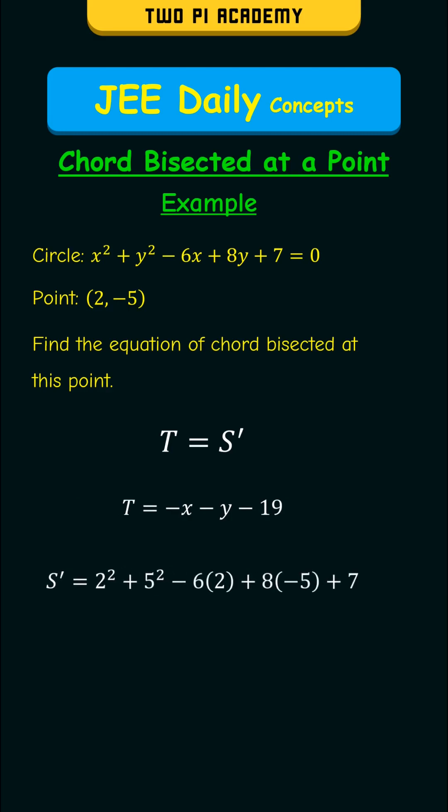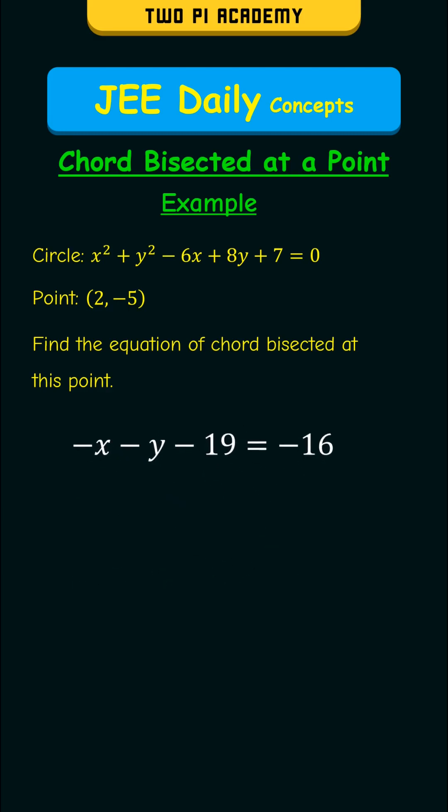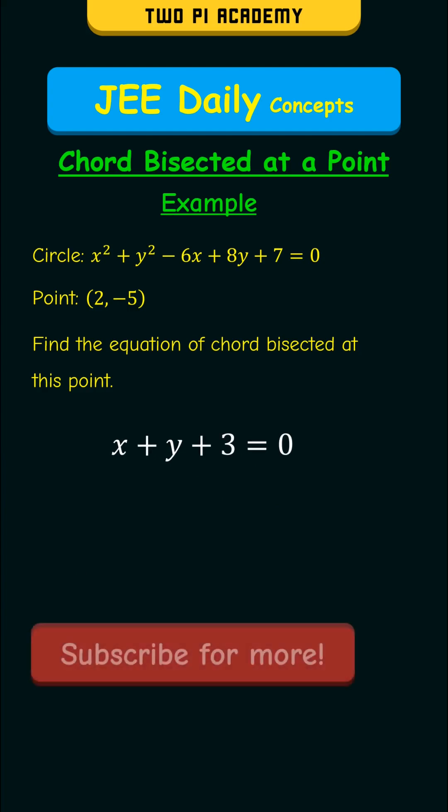Using the formula for S', we get S' = −16. So finally, the equation of the chord bisected at this point is x + y + 3 = 0.